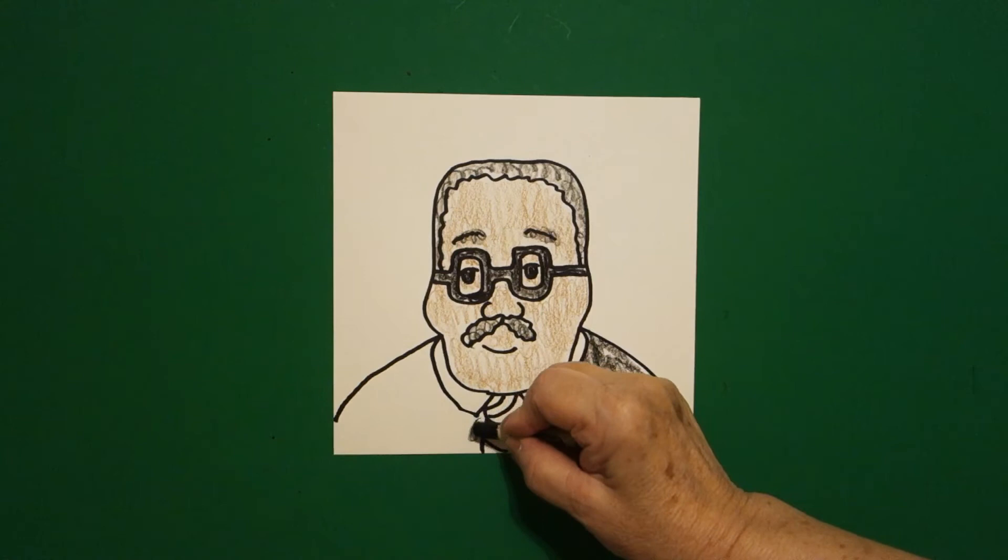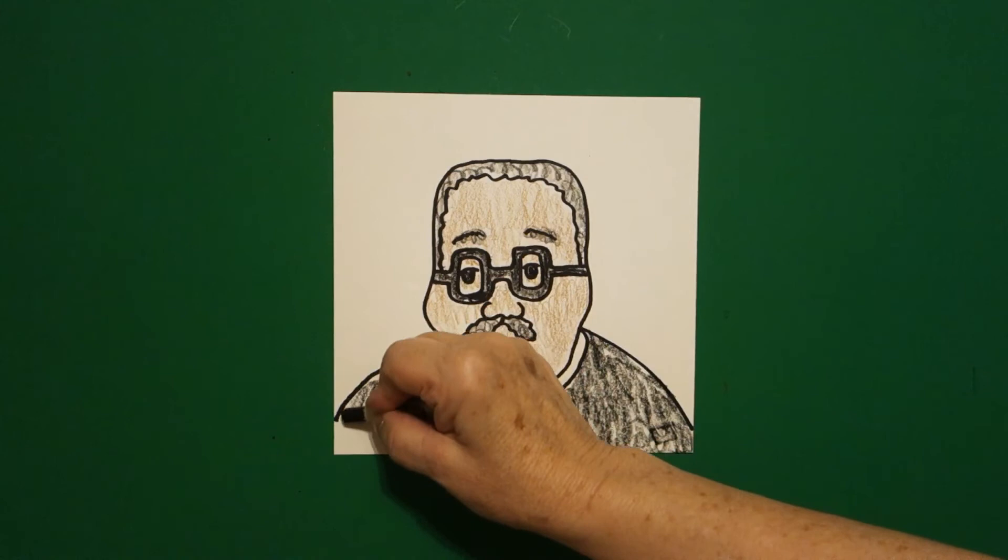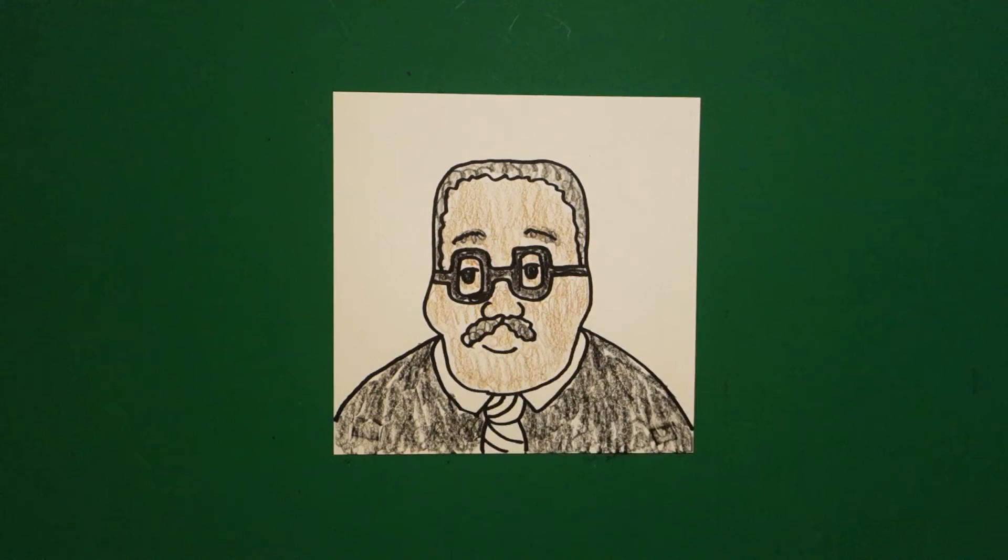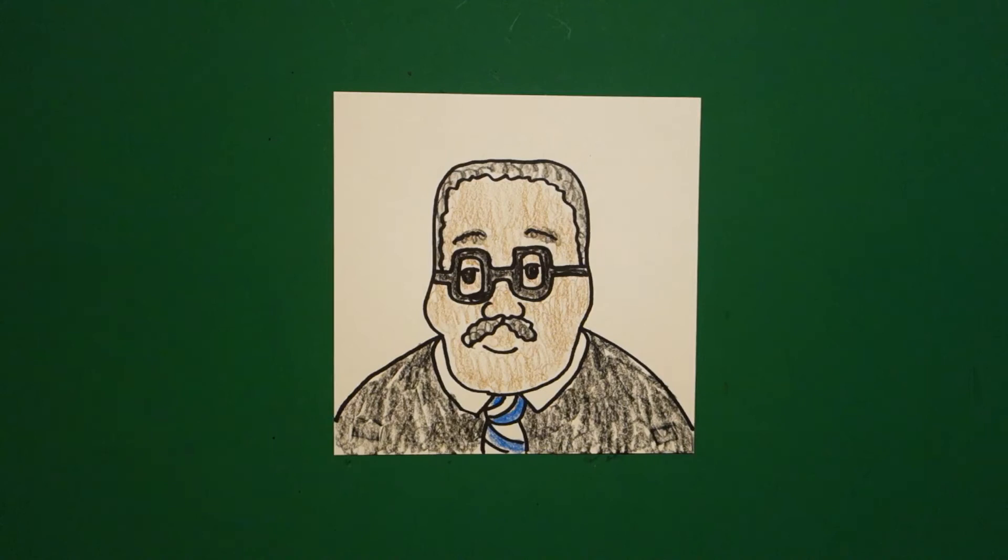And pretty much the only little bit of color that he seemed to let himself have was his tie. So once we finish our black robes, I gave him, and this is just me, I gave him a red, white, and blue tie, which he probably never would have worn. But hey, I'm an artist. You're an artist. So you can do your tie any color you want. This is just what I did. Just to give him a little bit of color.